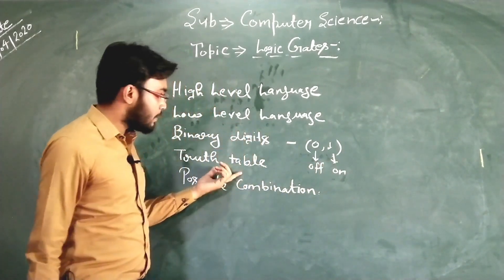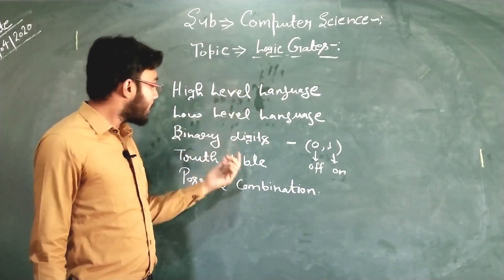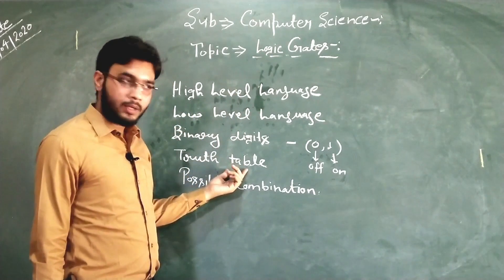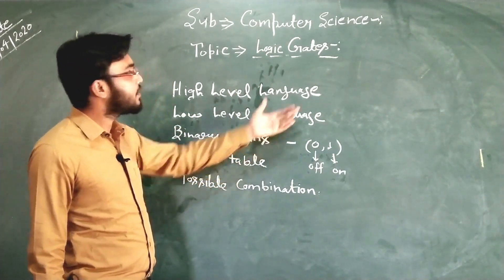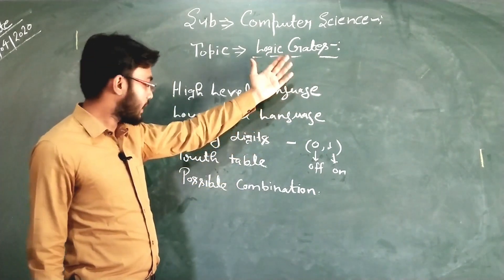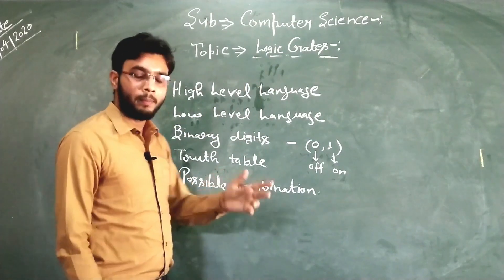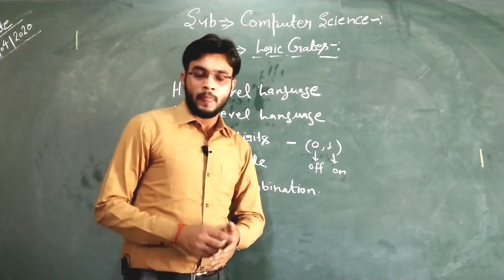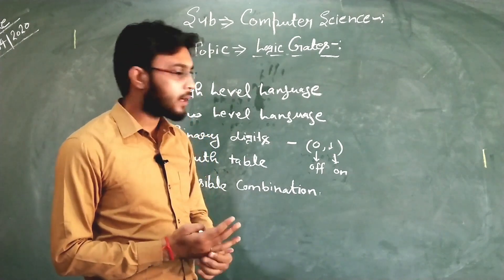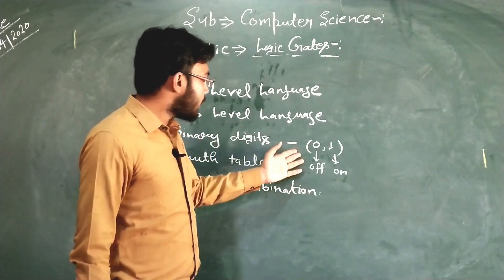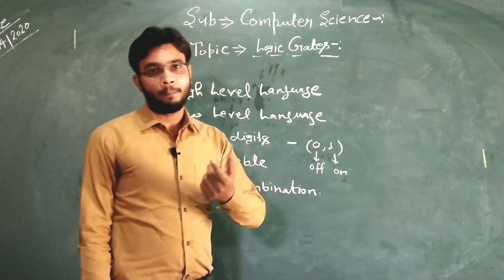Truth table: when we define a logic gate, we must need a truth table, because a truth table is the way by which we can define a logic gate. And then possible combinations — possible combinations means when we give input to the computer, the output is according to the input.